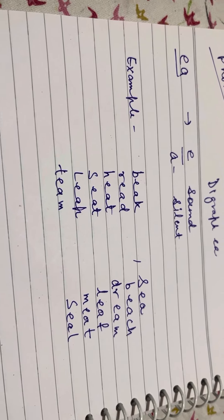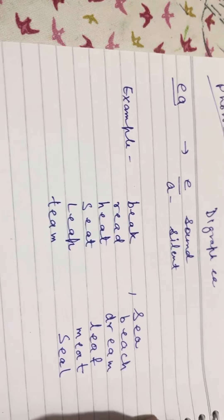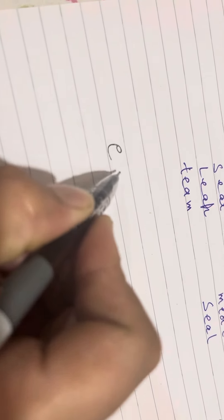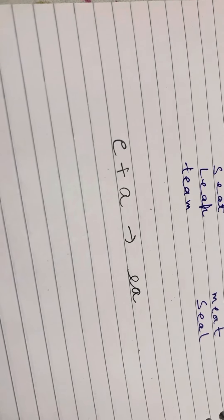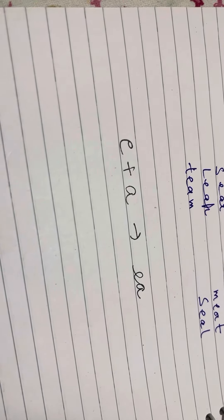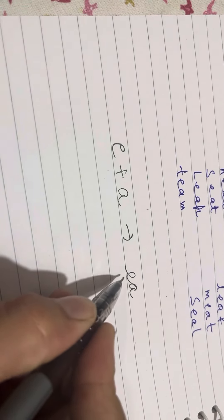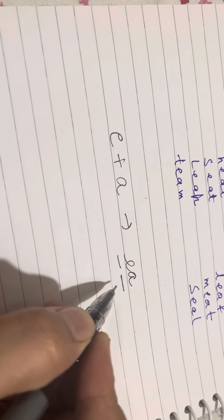Today's digraph is EA. When we mix two letters E and A, they make the EA blend and the sound is E. E makes the E sound and A is silent here.